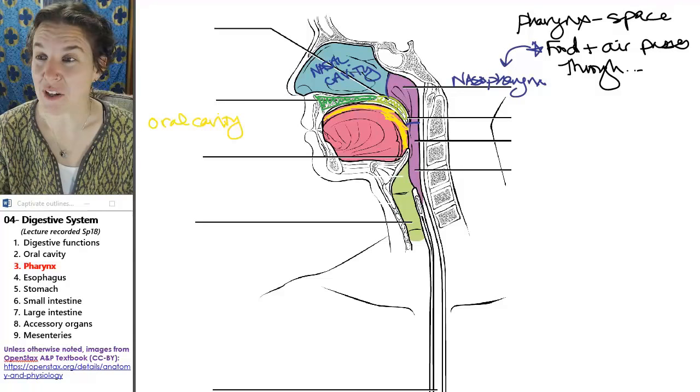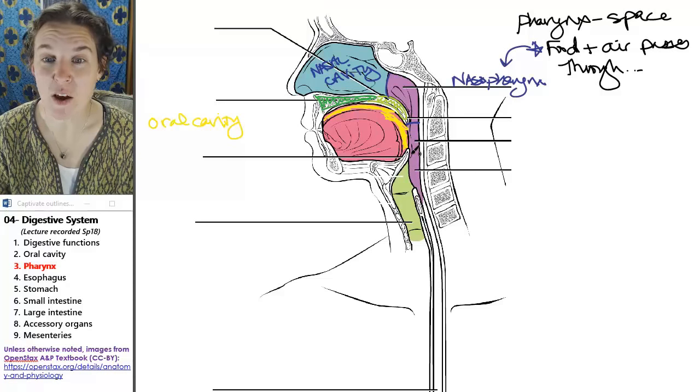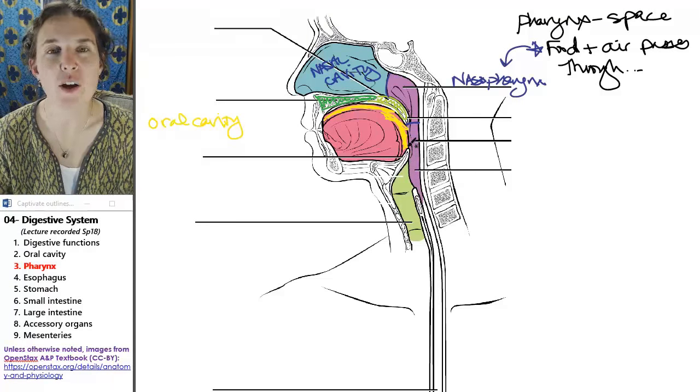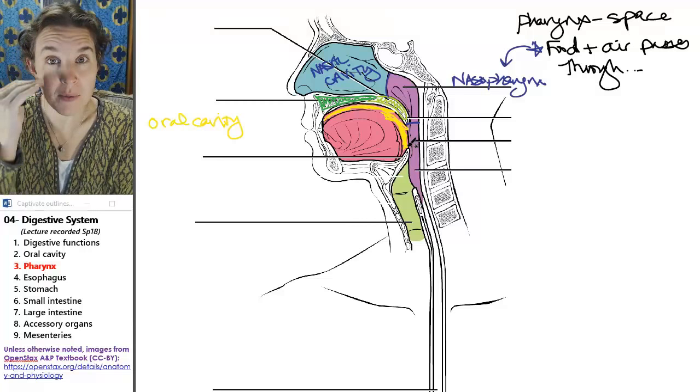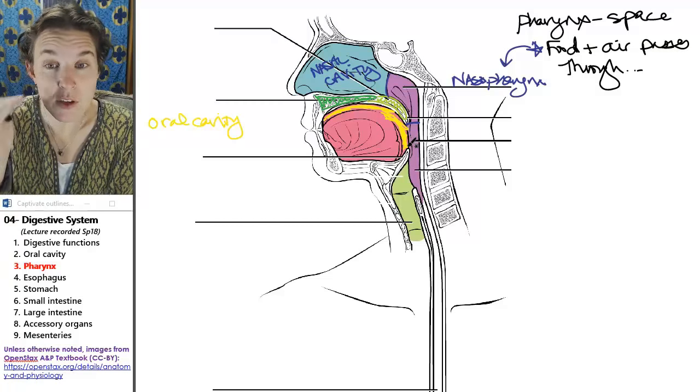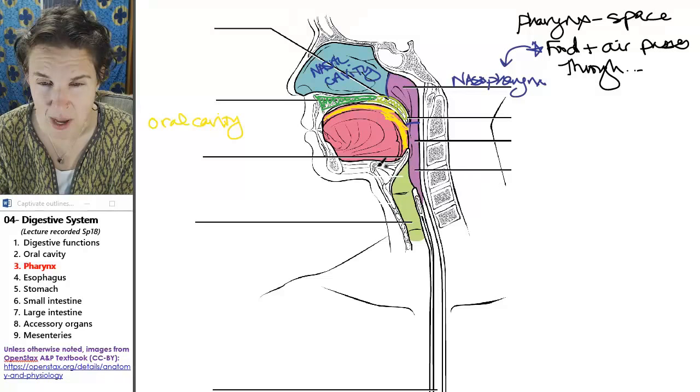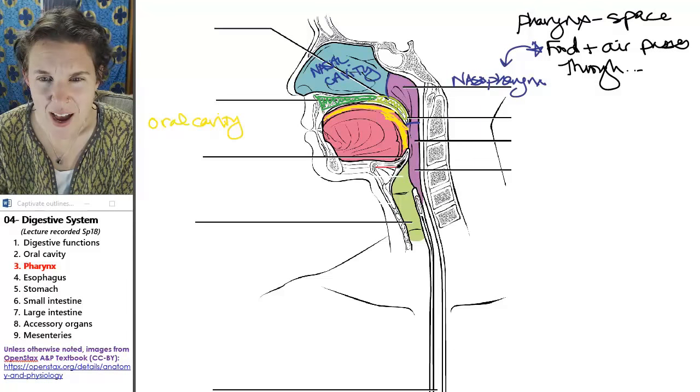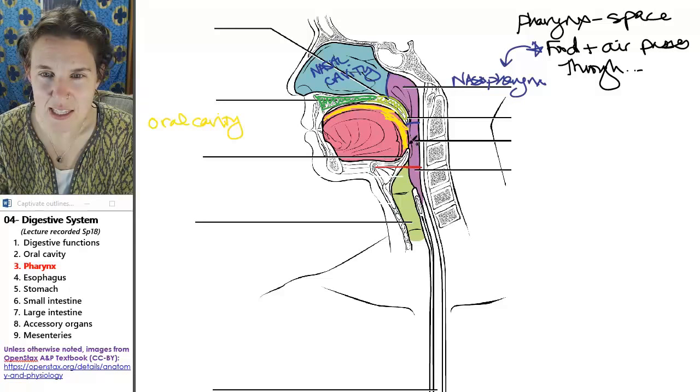Inferior to the nasal pharynx is the oropharynx. And the oropharynx goes from the end of the uvula or the end of the soft palate to the hyoid bone. And so take a look at this. This right here is my oropharynx.